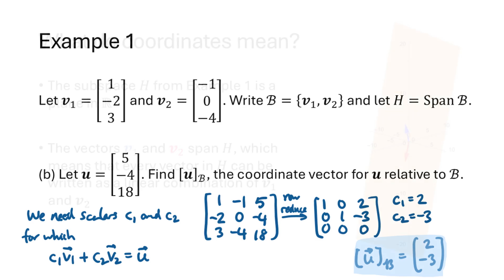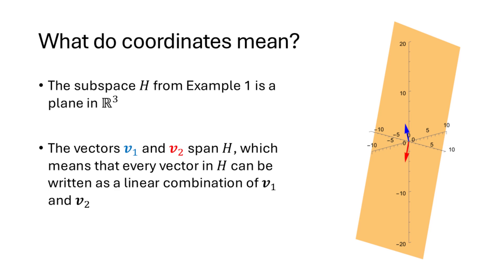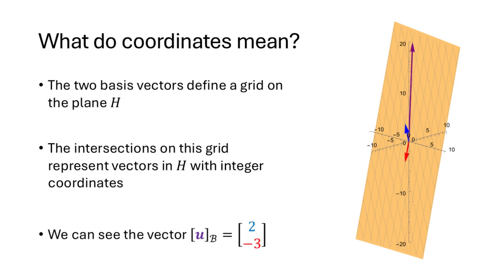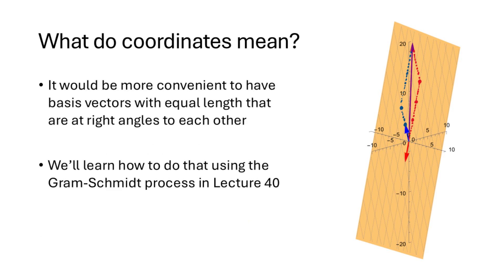What does this actually mean geometrically? The subspace from Example 1 is a plane in R^3, pictured here with vectors v1 and v2. Since v1 and v2 span H, every vector in H is a linear combination of v1 and v2. These two vectors define a grid on the plane, where intersections represent vectors with integer coordinates — a skewed version of our normal xy-plane grid. The vector u is graphed at the point (2, -3) on this grid. It would be more convenient to have basis vectors of equal length at right angles, giving a regular rectangular grid, and we'll learn how to do that using the Gram-Schmidt process in Lecture 40.